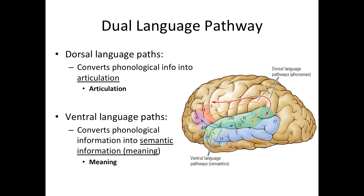The Wernicke-Geschwind model is very old, and more contemporary language models have since emerged. In this more contemporary model, based on more recent anatomical and behavioral studies, more connections were added to the older model. In this model, the temporal and frontal cortices are connected by pairs of dorsal and ventral language pathways — not identical to the dorsal and ventral visual streams, but viewed as extensions of them.